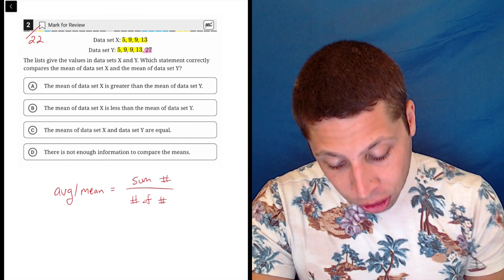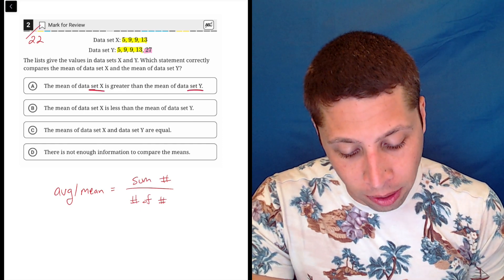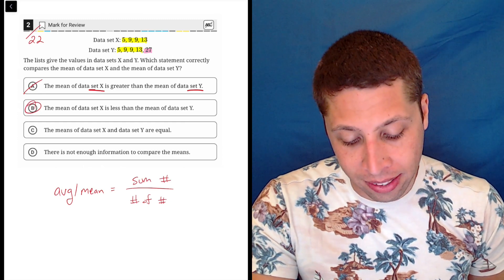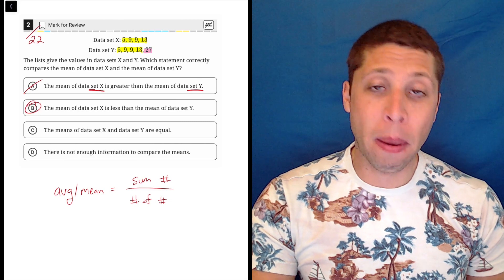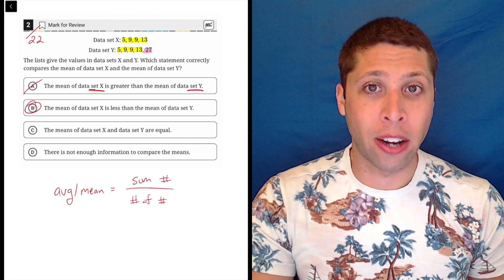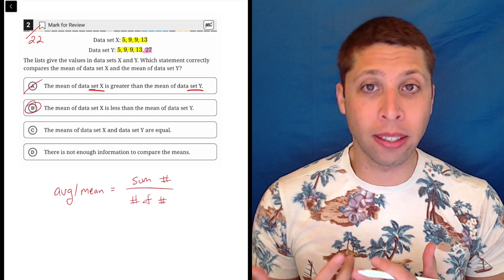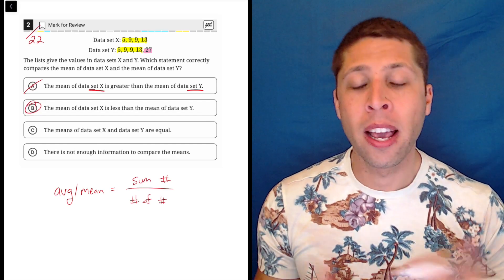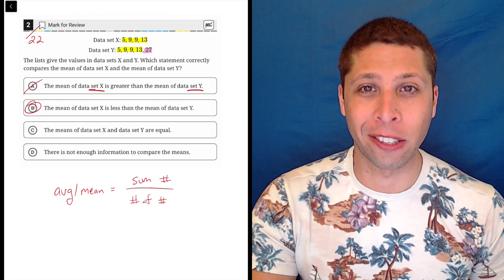So just make sure you read the questions or the choices correctly. The mean of data set X is greater than the mean of data set Y. No, that's backwards. It's choice B. The mean of data set X is less than the mean of data set Y. So definitely memorize the formula, understand how to calculate it, but pay attention to where you are in the section because a lot of times with these statistics questions, it's much more about understanding a concept than actually computing all the different components of the statistics for the question.